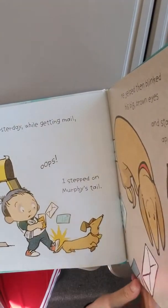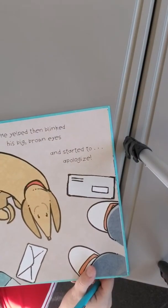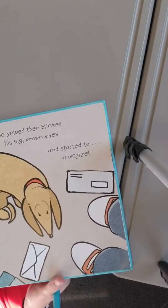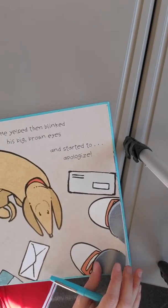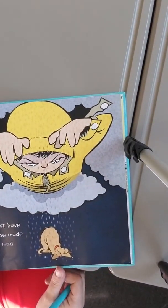So yesterday while getting mail, oops, I stepped on Murphy's tail. He yelped, then blinked his big brown eyes and started to apologize. Murphy thinks when things go bad, he must have somehow made me mad.